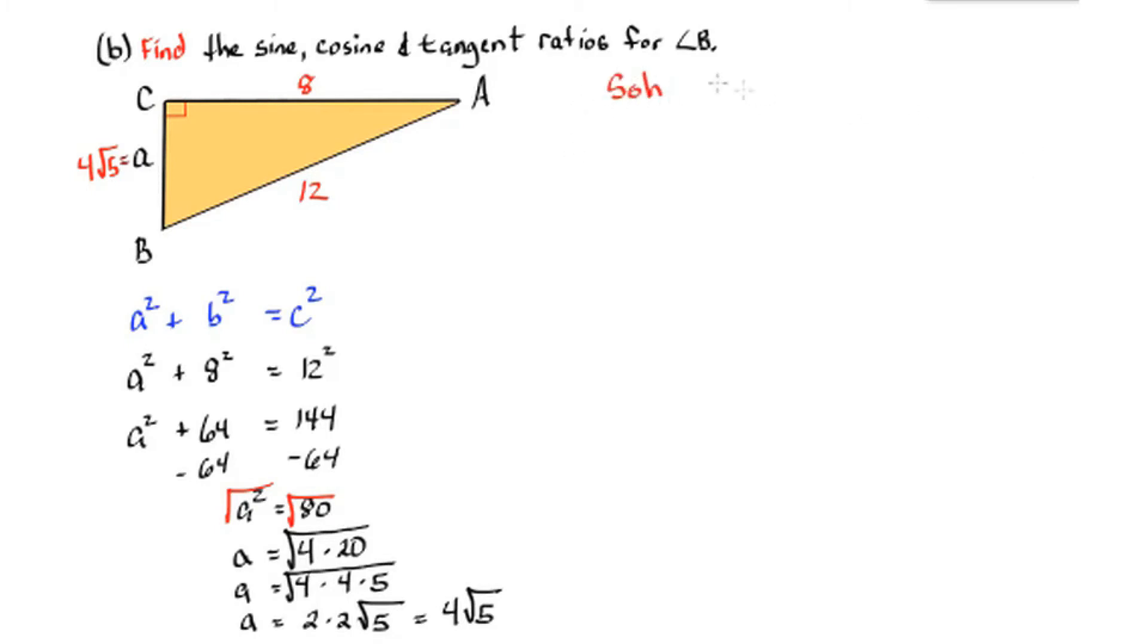Now we can use SOHCAHTOA again. And this time for angle B, side A is the adjacent, and side A is the opposite, and the hypotenuse is 12. Sine B equals the opposite leg over the hypotenuse, equals 8 over 12, or 2 thirds.